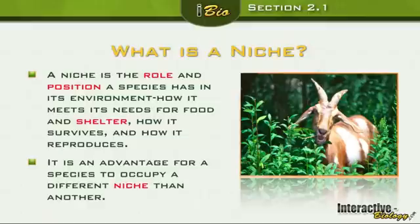It is advantageous for a species to occupy a different niche than another. Why would that be an advantage? So that they all have their own space. Why is that an advantage? So there's no competition for food — that's the key word. Less competition. If every organism fed on the same thing, there's going to be less to go around and more competition. So it's an advantage if you can occupy a different niche than another species.